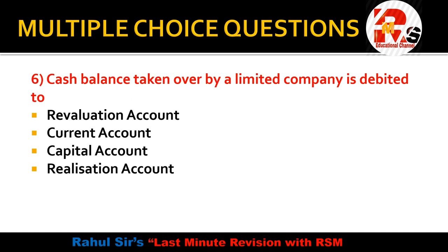Question 6 asks: cash balance taken over by a limited company is debited to — revaluation account, current account, capital account, or realization account? This is from the chapter related to conversion into a limited company. The right answer is realization account — the cash balance taken over is debited to the realization account.